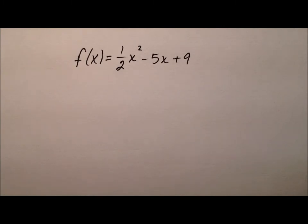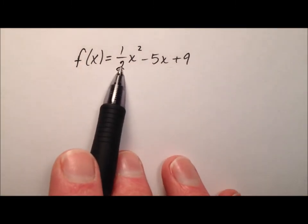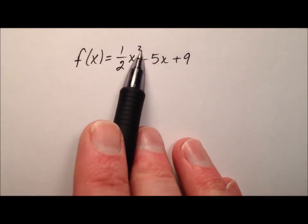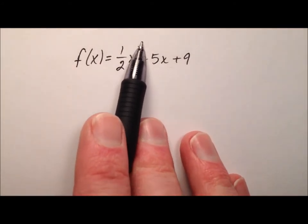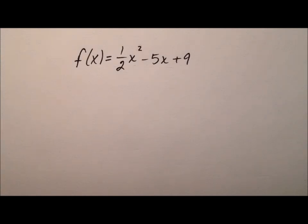In this example, we're going to take a look at the function f(x) = ½x² - 5x + 9. We'll see that this is a quadratic function — its degree is 2 — and it's written in standard form. We're going to discuss some of its characteristics, including its domain and range, its graph, whether the graph opens upward or downward, finding its vertex, and increasing and decreasing of the function.